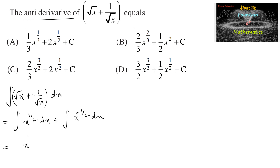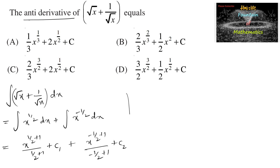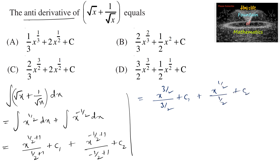Here we can write x to the power of 1 by 2 plus 1 upon 1 by 2 plus 1, plus some constant c1. And here we can write x to the power of minus 1 by 2 plus 1 by minus 1 by 2 plus 1, and another constant c2. Which is equal to x to the power of 3 by 2 divided by 3 by 2 plus c1. And here x to the power of 1 by 2 divided by 1 by 2, plus c2.